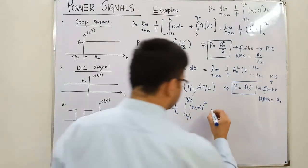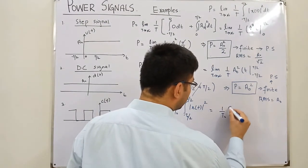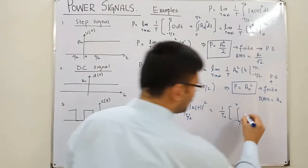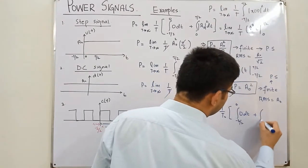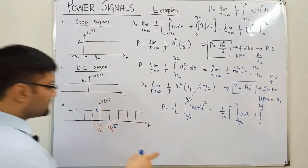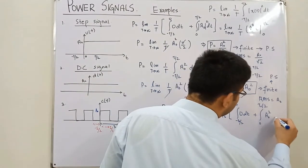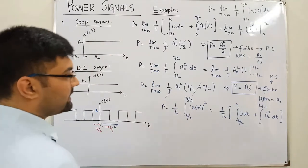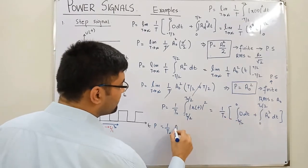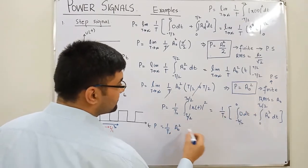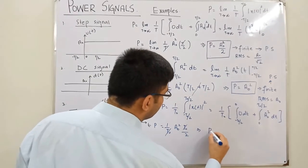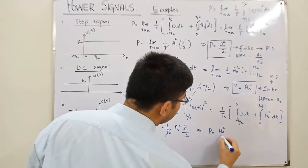So you integrate by splitting: from −T₀/2 to 0 the function value is 0, and from 0 to T₀/2 the function value is a₀. Squaring a₀ gives a₀², which comes outside the integral. Integrating 1 with respect to t gives t evaluated from 0 to T₀/2, yielding T₀/2.